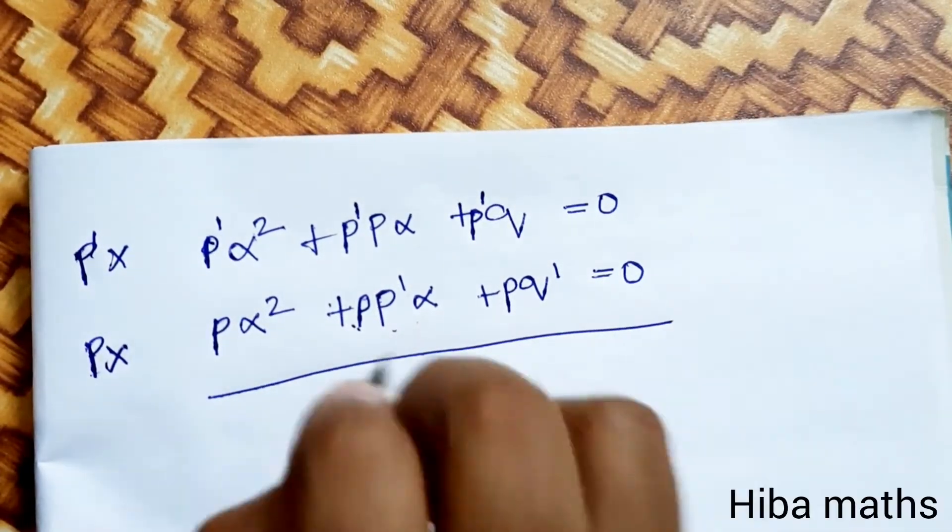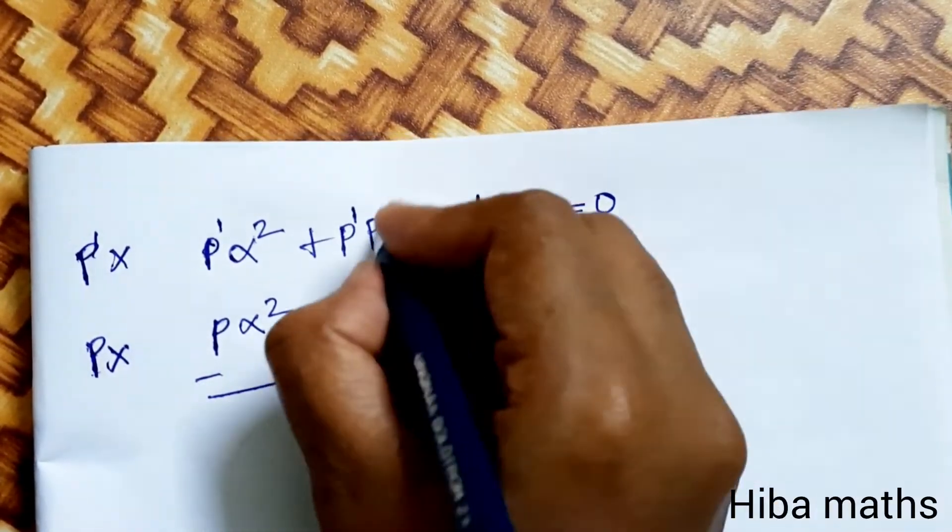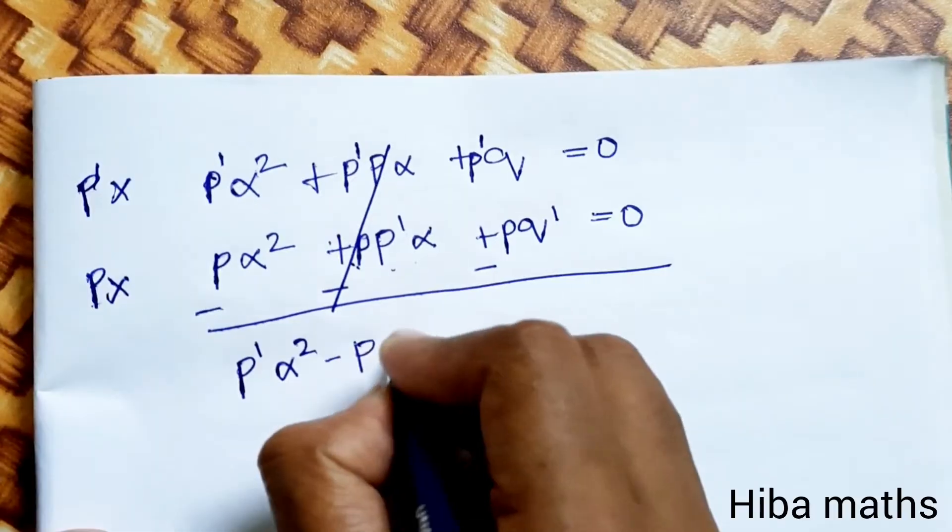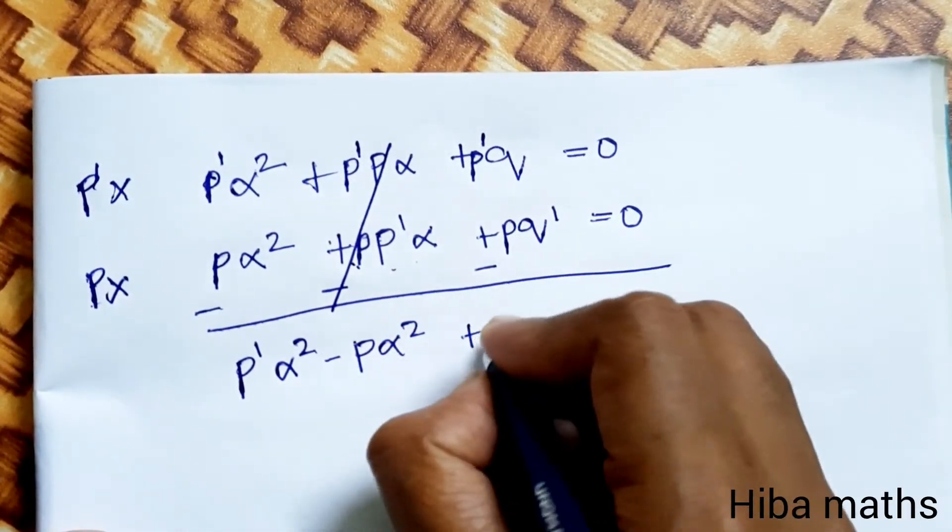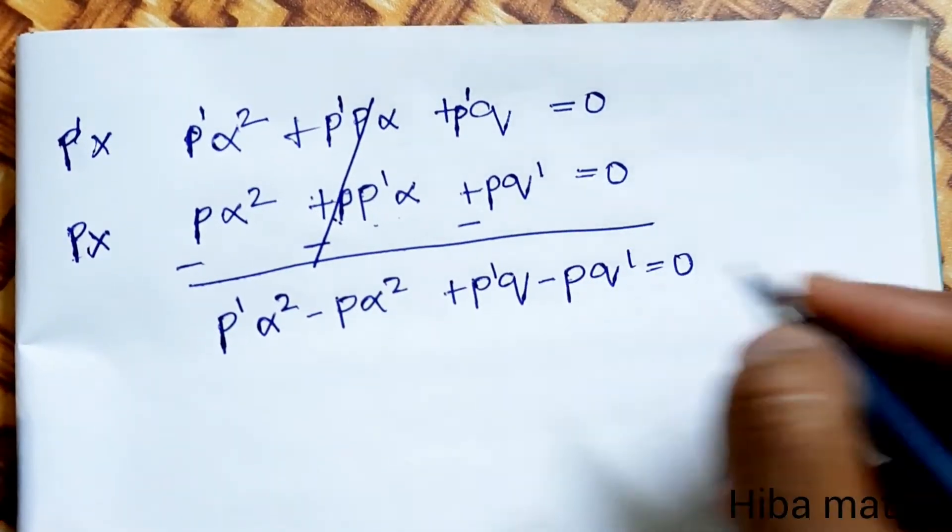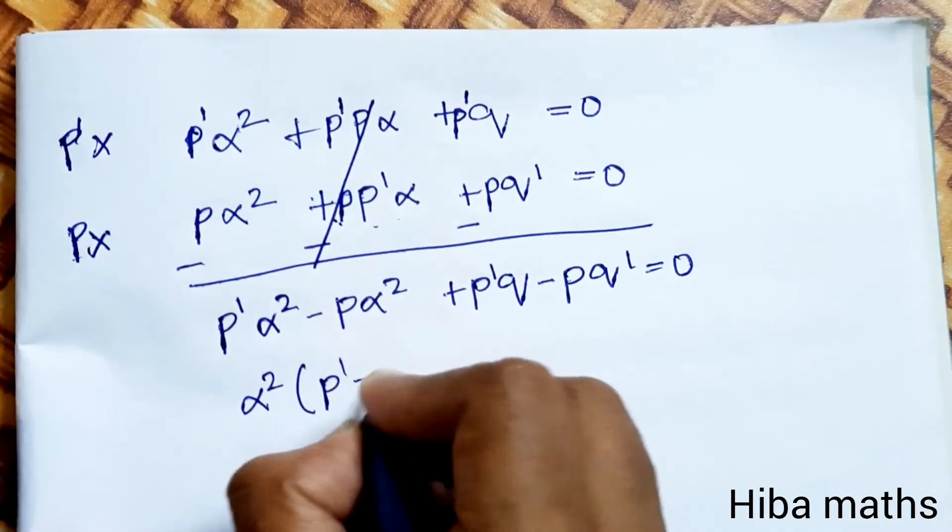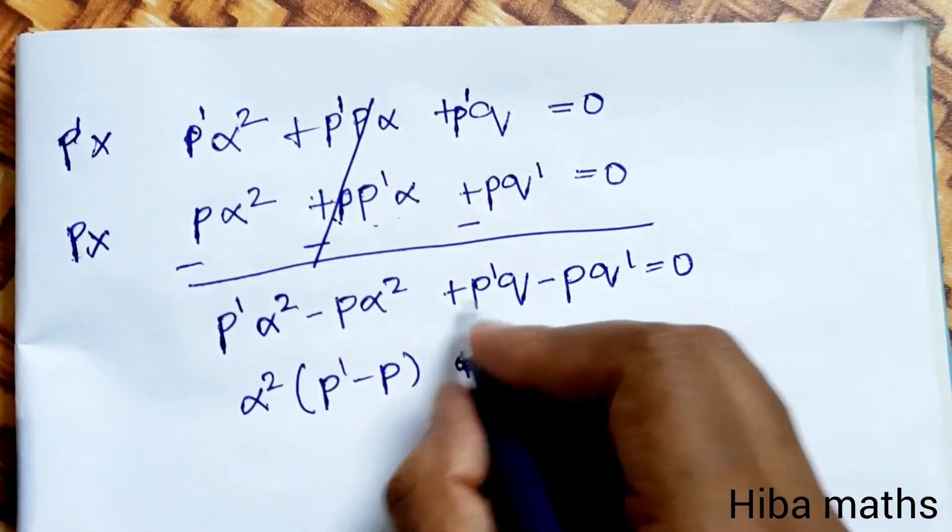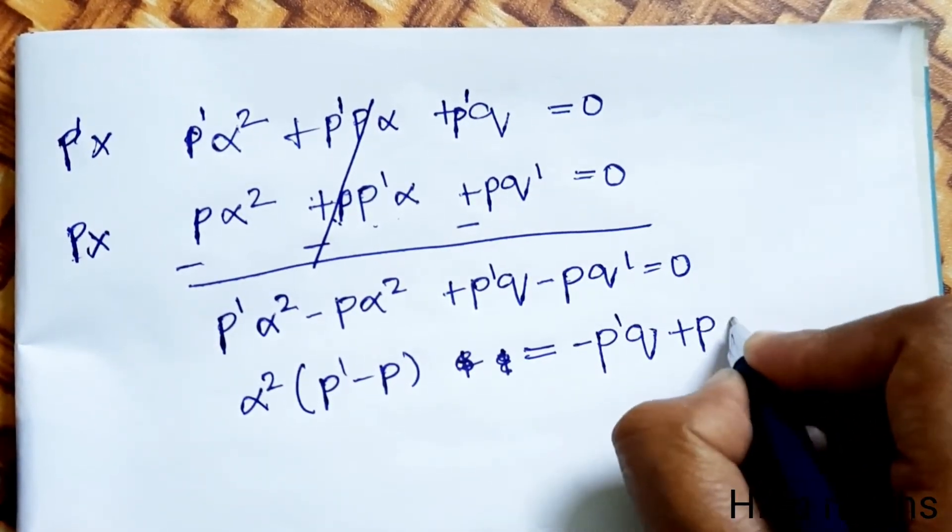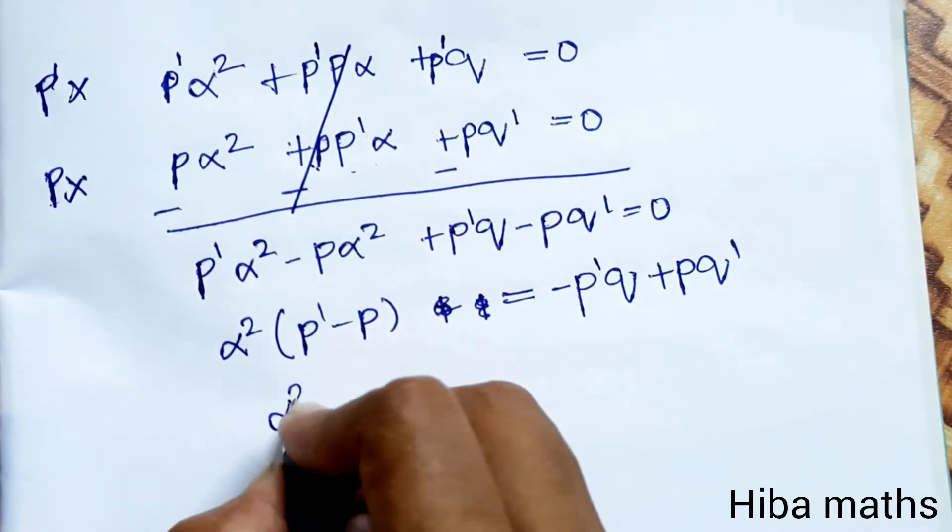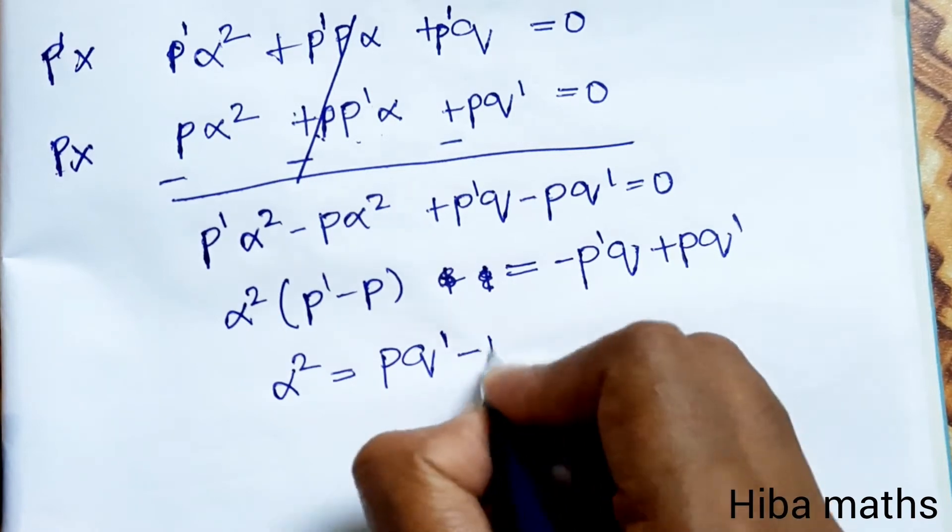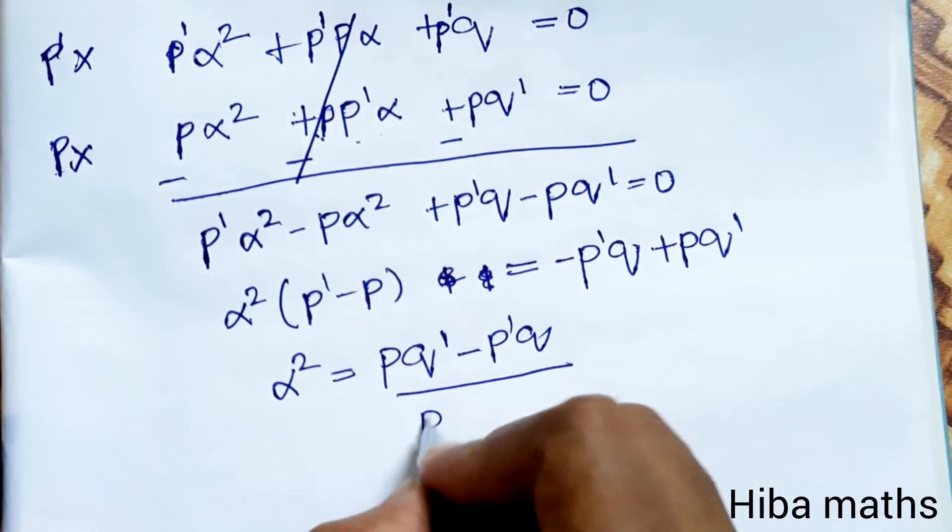Second equation times p: p'α² + p'pα + p'q = 0, and pα² + pp'α + pq' = 0. Now eliminate by subtracting: minus minus minus, cancel. So p'α² - pα² + p'q - pq' = 0. Therefore α²(p' - p) = pq' - p'q.